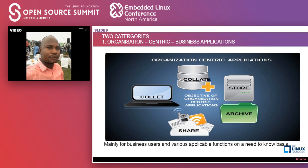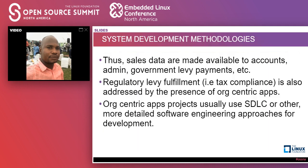We move on to the categories in which business applications are made. Firstly, we have organization-centric business applications and user-centric business applications. The objective of organization-centric applications is to facilitate business on a need-to-know basis. In an organization we have several departments, each with its own work — we collect information, store it, archive it, and share it with users, customers, and vendors.